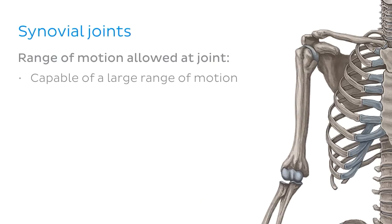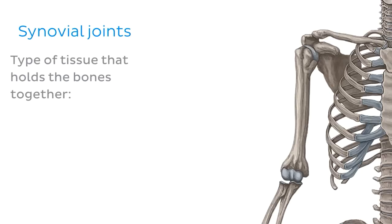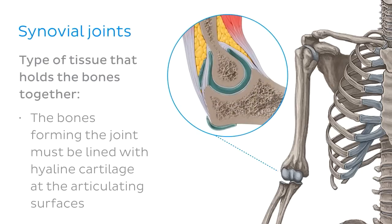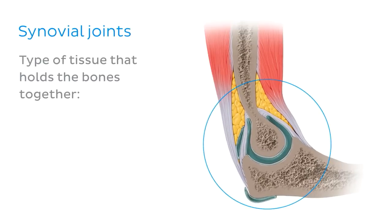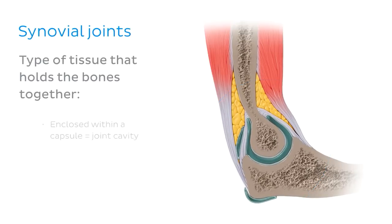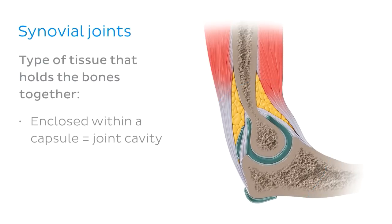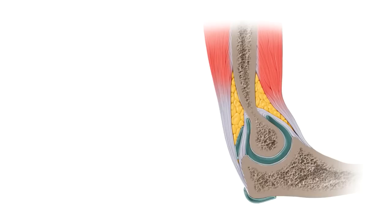A joint must meet a few criteria to be considered a synovial joint. First, both bones forming the joint must be lined with hyaline cartilage at the articulating surfaces. Second, the joint must be enclosed within a capsule, which creates the joint cavity. Within this joint cavity is synovial fluid, which lubricates the joint.